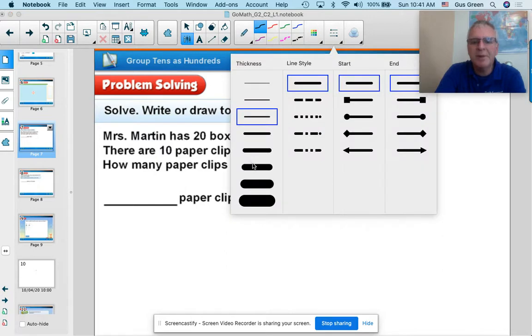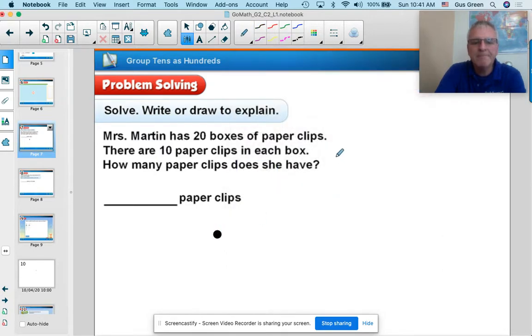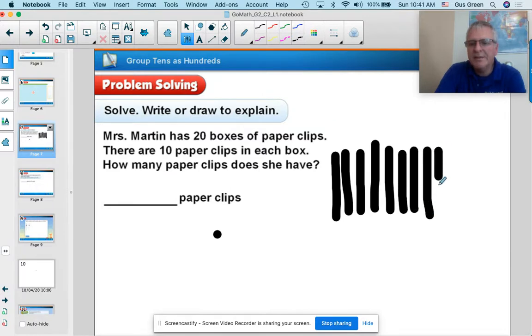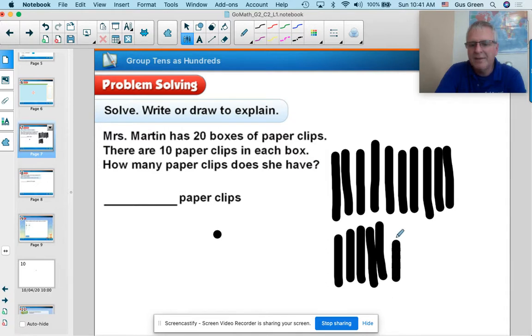Let me make my line a little bit thicker like that. So that can represent one box. So I'm going to do 20 boxes. 3, 4, 5, 6, 7, 8, 9, 10. I'm going to do another 10. So I have 20 boxes. 3, 4, 5, 6, 7, 8, 9, 10.